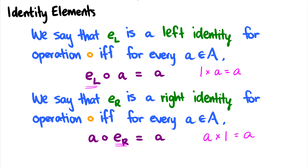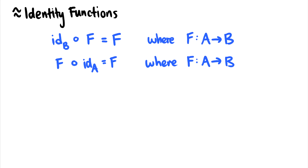Identity elements essentially send a thing back to itself — the element that the identity works with does not change. We've seen this with identity functions before. Earlier in this lecture series, I did a lecture on functions and compositions of functions, where we introduced the identity functions ID_B and ID_A. ID_B is a left identity function, and ID_A is a right identity function — they essentially map a function back to itself.